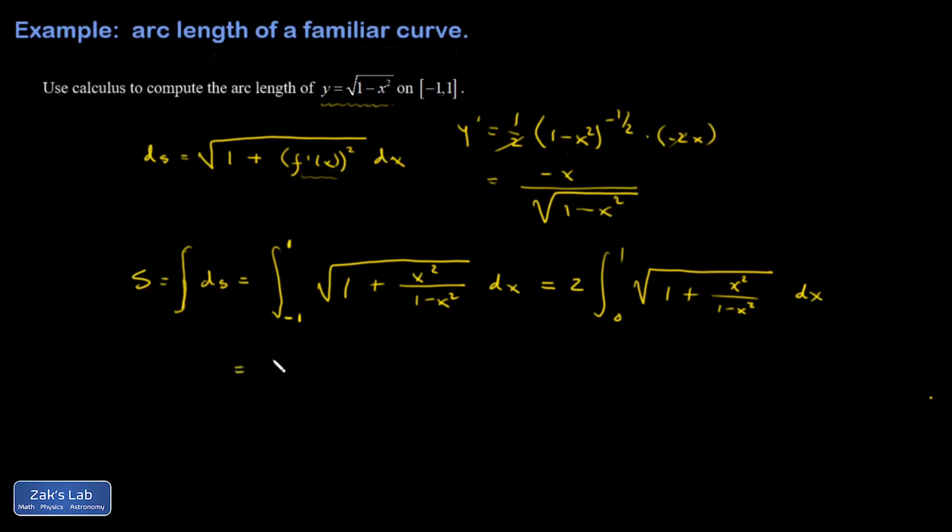Another thing just to illustrate some useful algebra is that I could get a common denominator inside here by writing 1 as 1 minus x squared divided by itself. And now I can just add the numerators. And when I do that, I get just a 1 in the numerator. And I'm left with something that looks fairly simple.